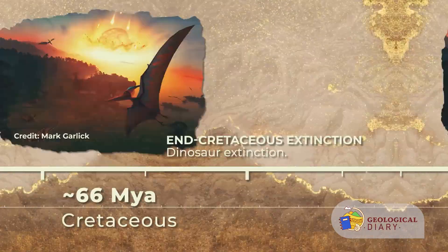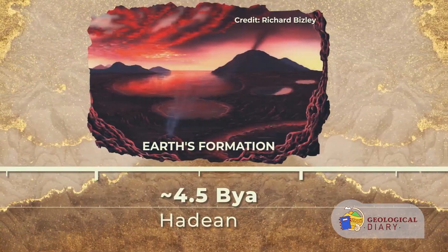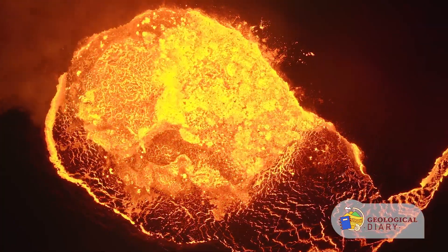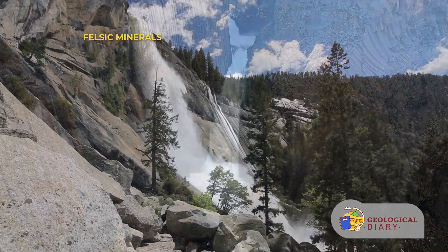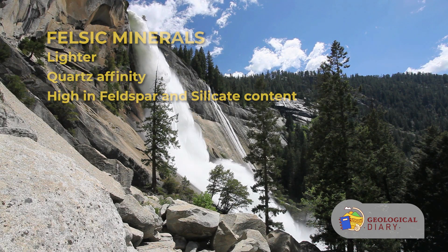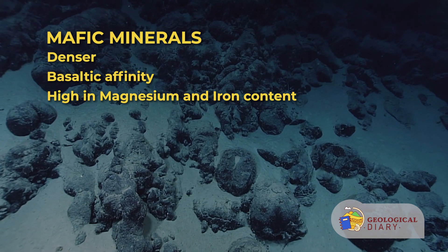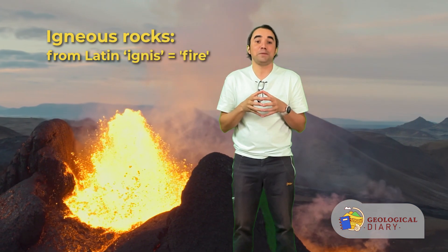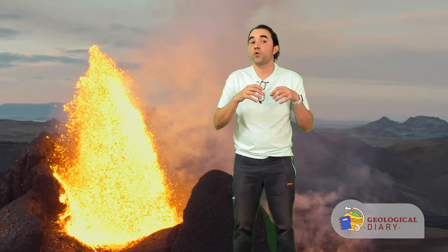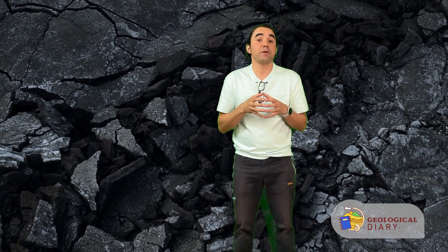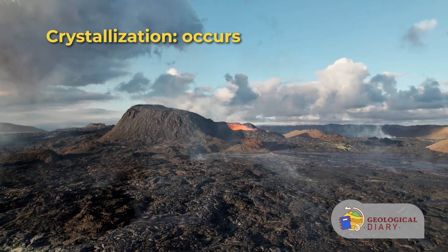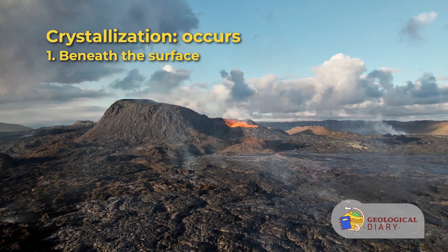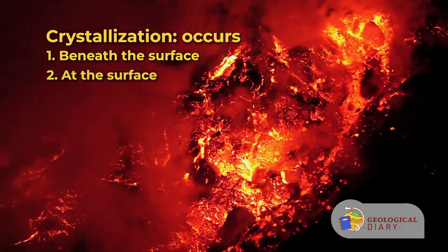Igneous rocks are thought to be the 'fresh rocks' because they would have been the product of the cooling down of primordial magmas to form silicates — the main mineral group composing them as well as the earth's crust, including the continental crust with felsic minerals of granitic affinity and the oceanic crust with minerals of basaltic affinity. Their very name is derived from the Latin ignis, meaning fire. They constitute the skin of the earth upon which we all live, and because they are intrinsically related to the formation of the earth's crust, they constitute a good beginning of the rock cycle.